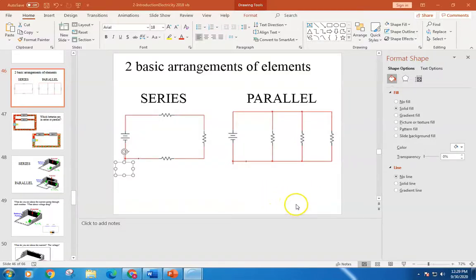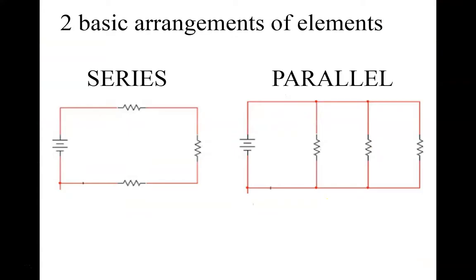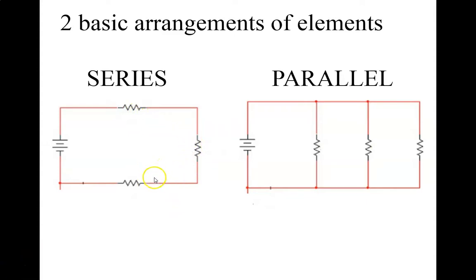Hello and welcome back to Principles of Engineering. Today we're going to be learning about the two main different types of circuits: series and parallel circuits. These resistors are arranged in series, meaning all the resistors are arranged one after the other - there's no branching out or anything. Everything is in one loop.